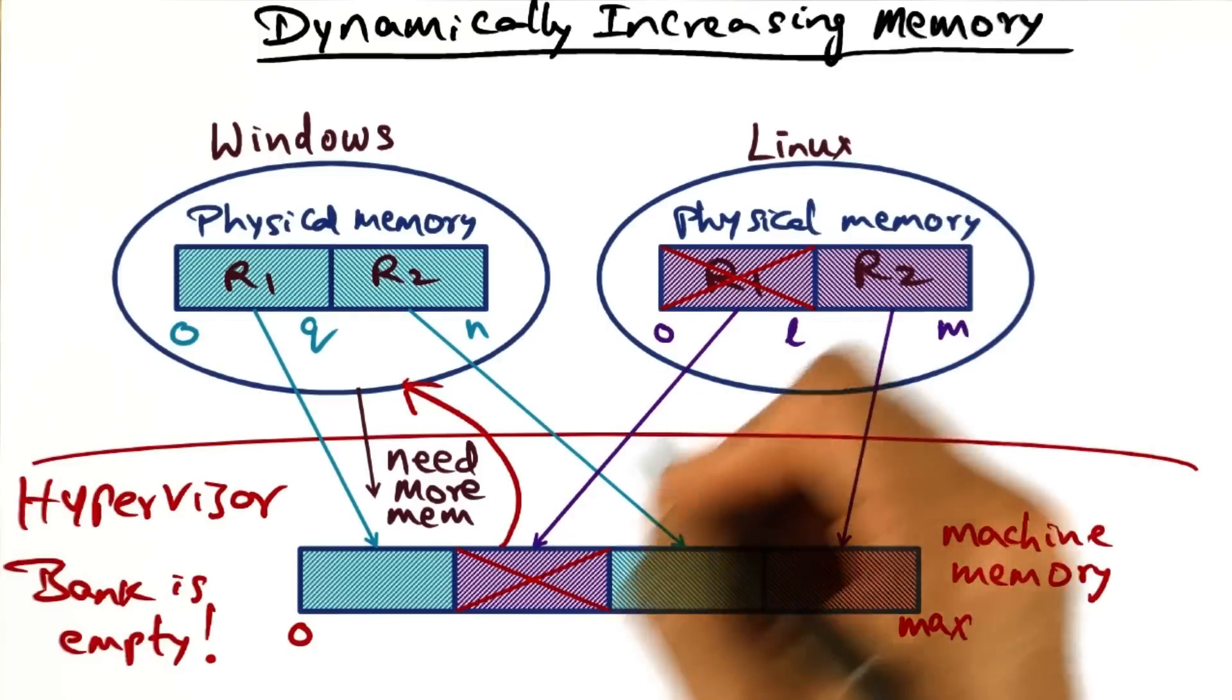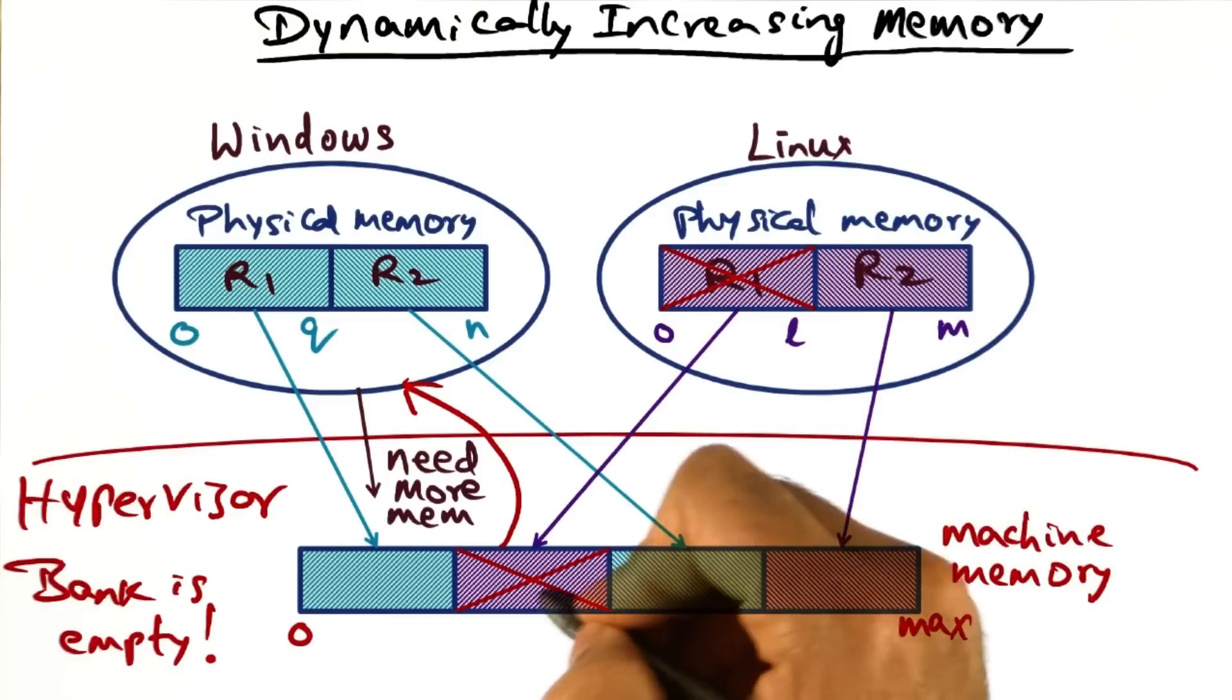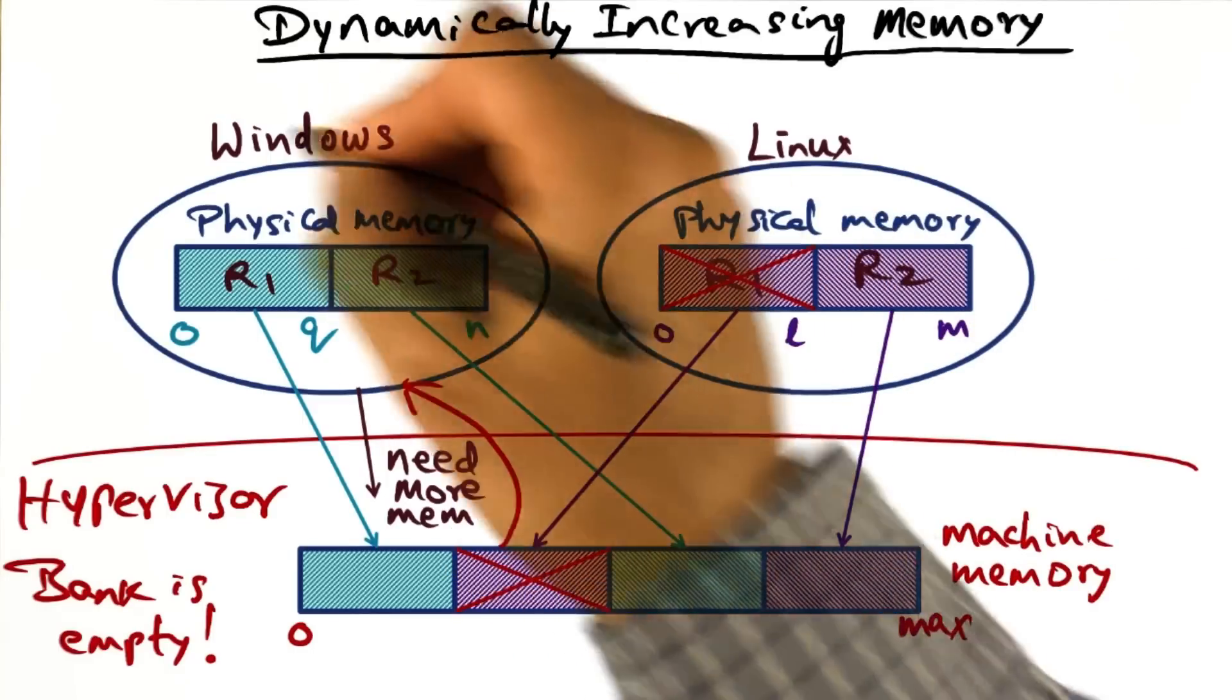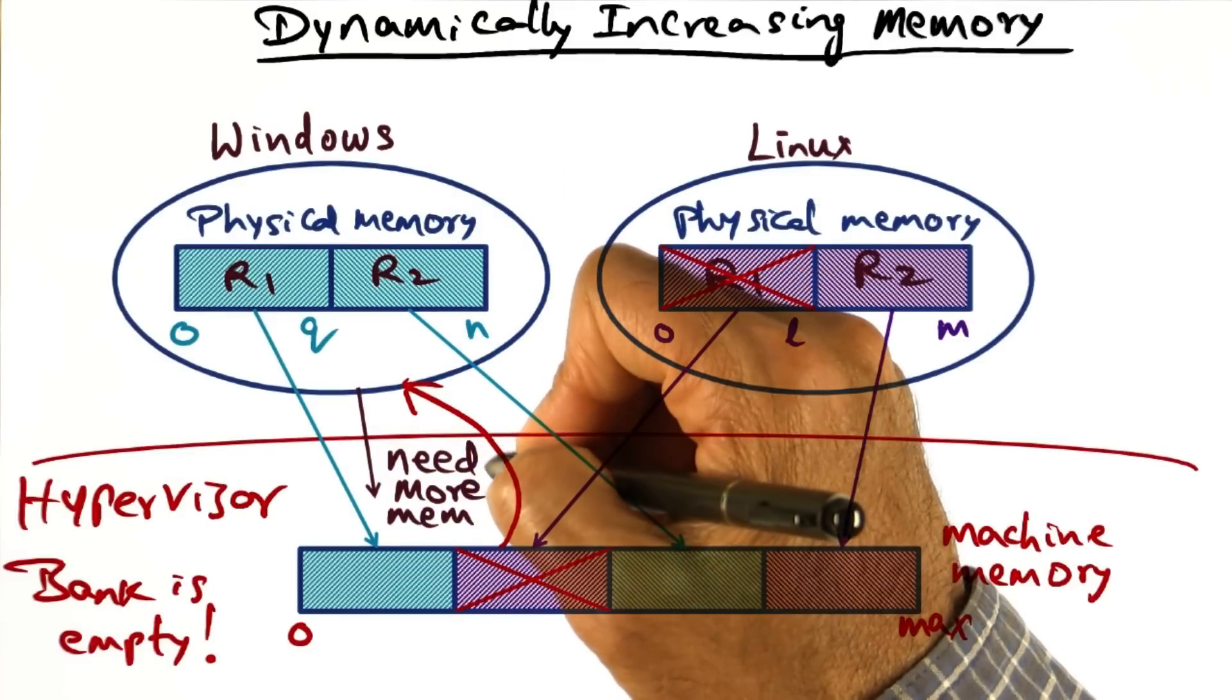And once I get back this portion of physical memory that I previously allocated to Linux, I can then give it to Windows to satisfy its sudden hunger for more memory.